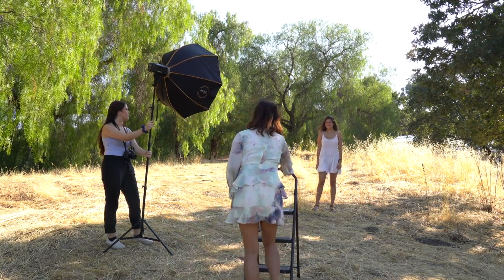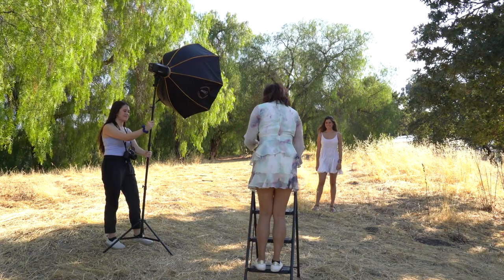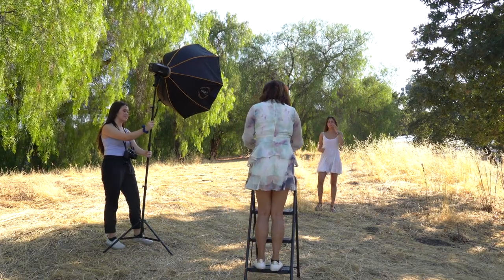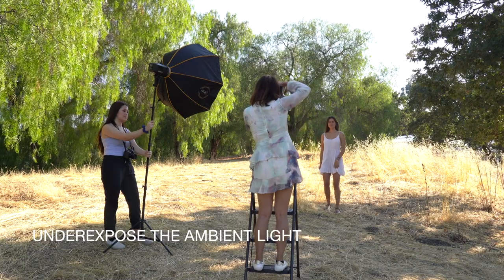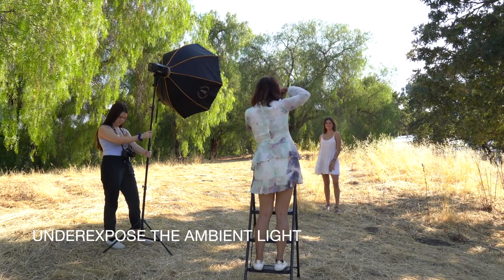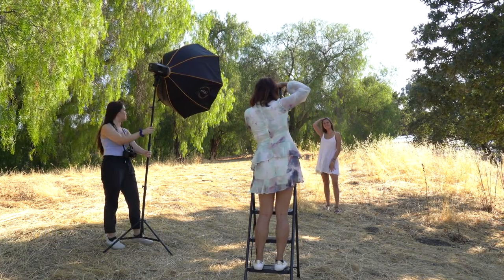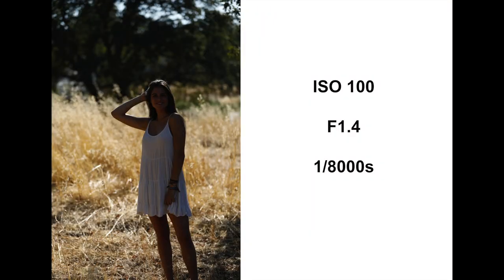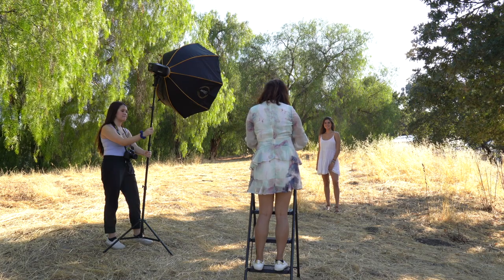Before turning on the flash, I will do a few test shots and expose for the background, and I will underexpose the ambient light. I want the background to be blurred, so I'm using F1.4. After a few test shots, I determine the shutter speed to be 1/8000 of a second. You can see that the subject is dark, but the ambient light is properly exposed — and this is exactly what I'm looking for. After getting my desired ambient exposure, I will turn on the flash.